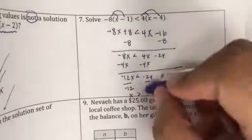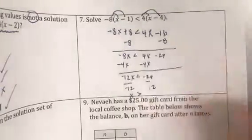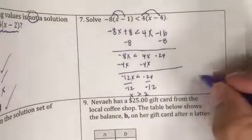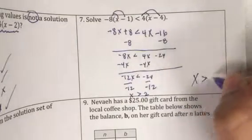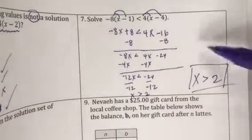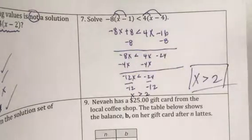And that's a -12, not 72. So when we divide that, that's 2. So our answer is x less than 2. So any number less than 2 would make this statement true.